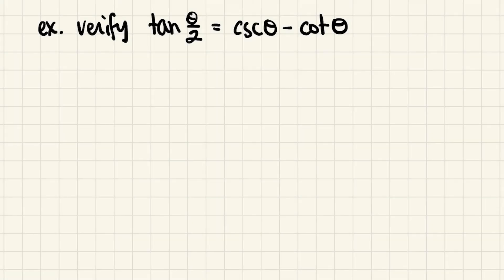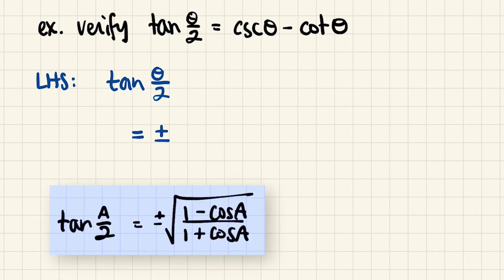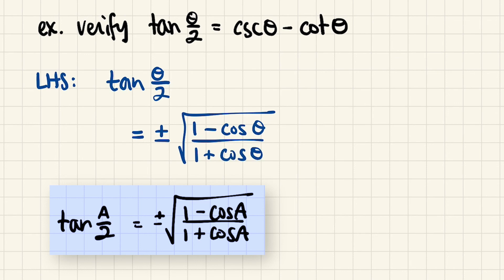Here we have an identity that needs to be verified. As always, a good principle is to start with the more complicated side, but an equally important policy is to start with the side that has a very clear directive. Starting with the left-hand side, we can right away use a half angle identity, which is going to unwrap this into some radical expression. So let's go with the left-hand side and use the half angle identity for tangent.